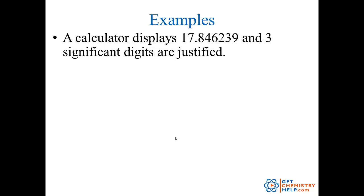Let's look at a couple of examples and see how these rules play out. Here's a number — 17.846239 — that you might get on your calculator, and you want to keep just three significant digits. The one, the seven, and the eight are all significant. The first non-significant digit is this four, and according to rounding rule number one, less than five means we just drop all the non-significant ones. So that rounds off to 17.8.